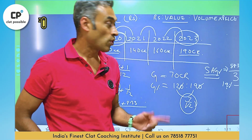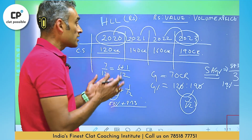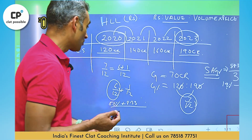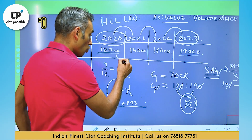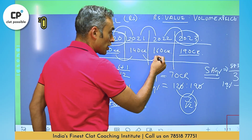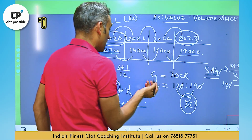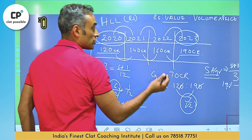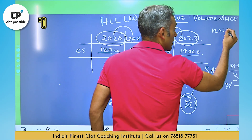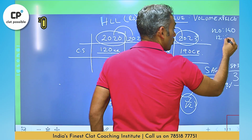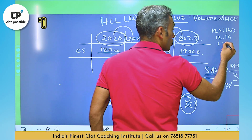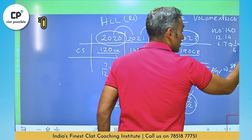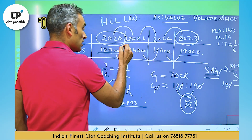Suppose they ask which year had the maximum growth rate. From 120 to 140, from 140 to 160, and from 160 to 190 — let's calculate each. From 120 to 140, using ratios: 12 is to 14, or 6 is to 7, which is 1 upon 6, equal to 16.66%.